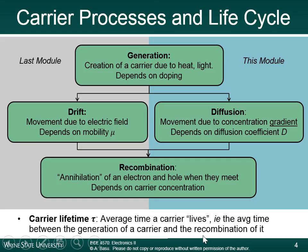Recombination is the annihilation of an electron and hole when they collide. The electron — moving through the lattice — finds an incomplete bond (a hole) and jumps into it, so both disappear. The higher the carrier concentration, the more likely holes and electrons are to bump into each other, so recombination is dependent on concentration.